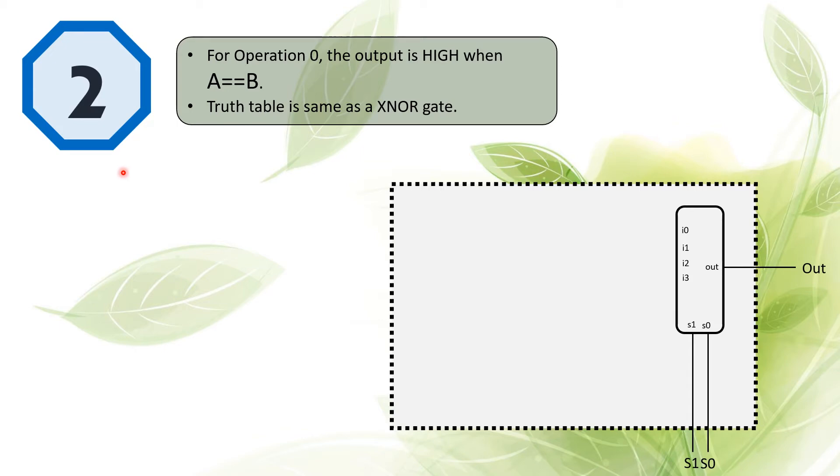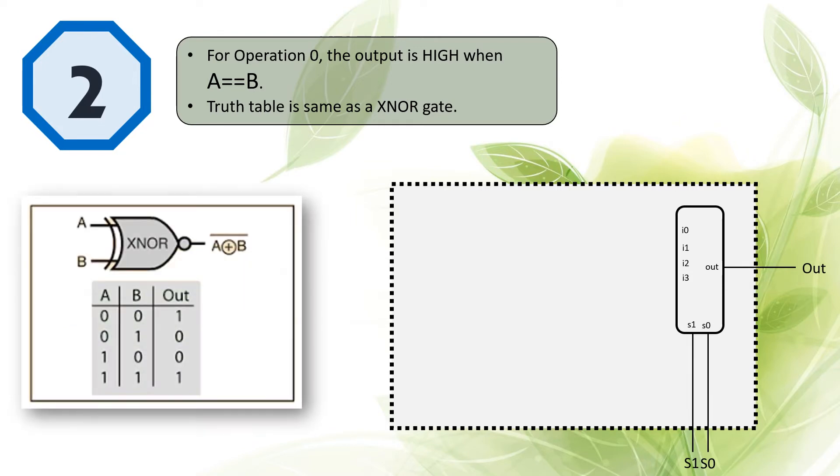The second step is looking into operation zero, which outputs a high signal when the input signal of A is equal to B. We analyze this Boolean expression and found that A equal to B is actually like an XNOR gate. So we will add one XNOR gate by taking the input of A and B and goes into the I0 of the four-to-one multiplexer.